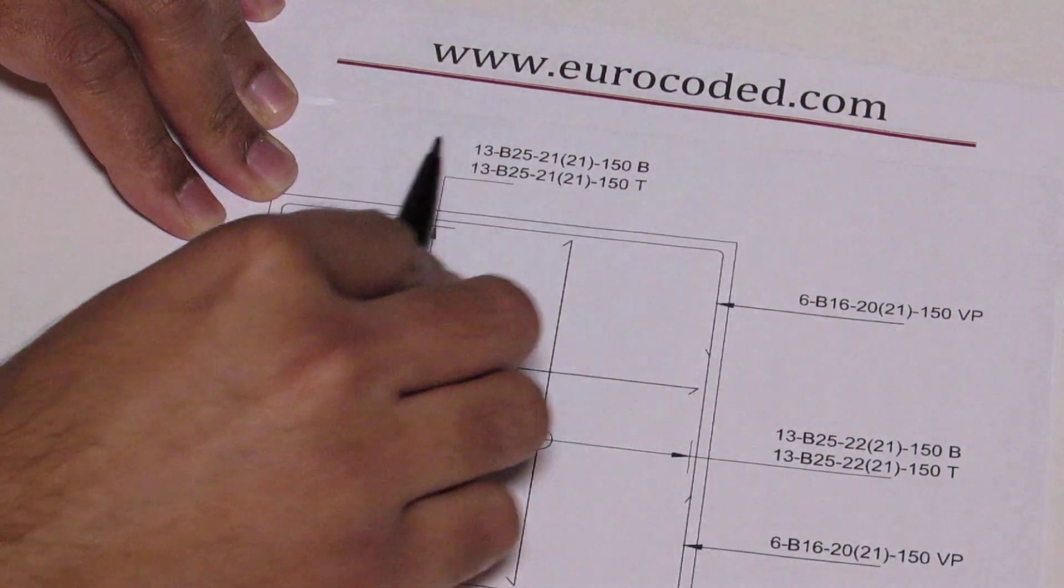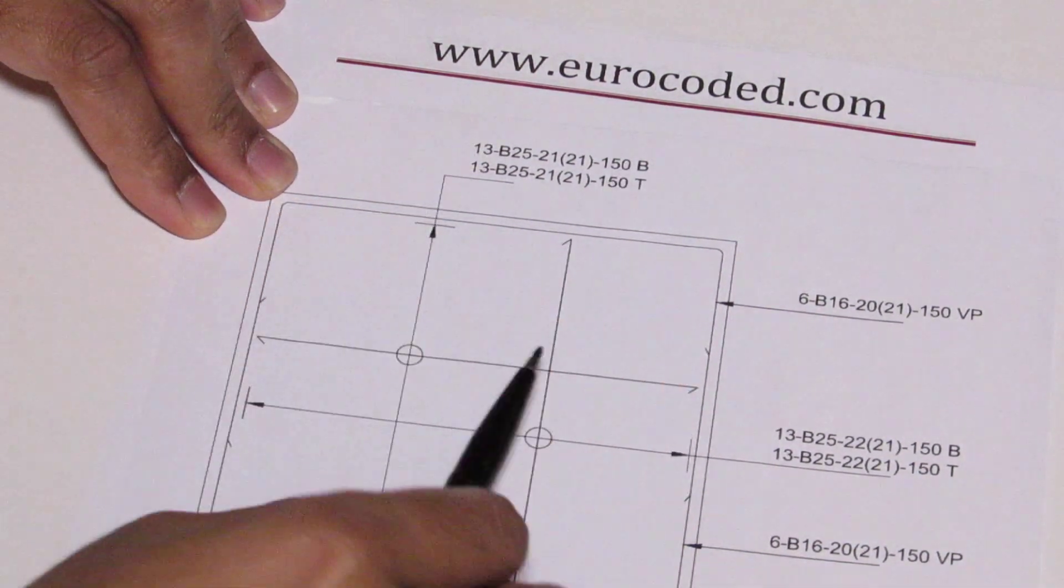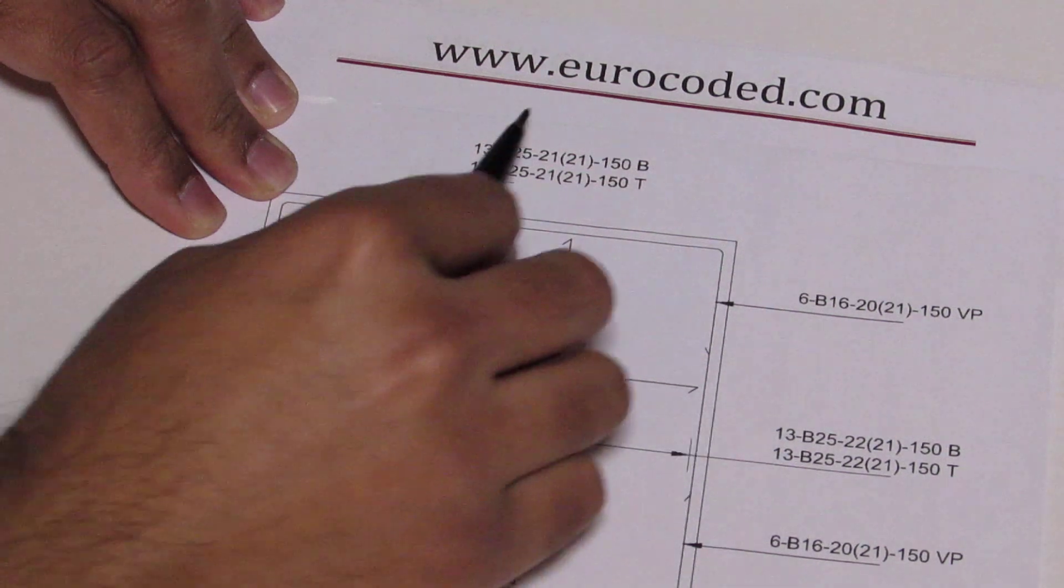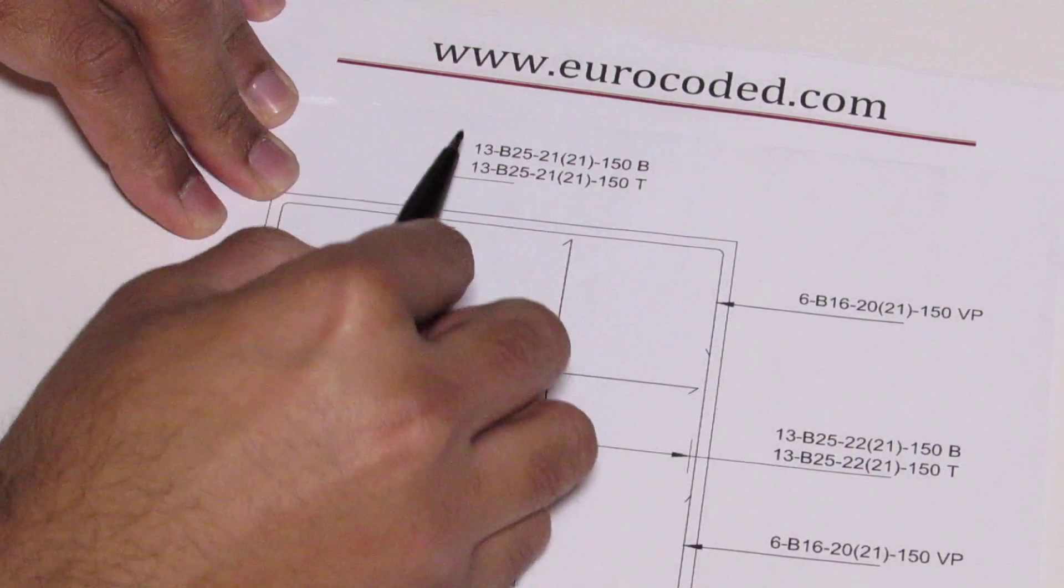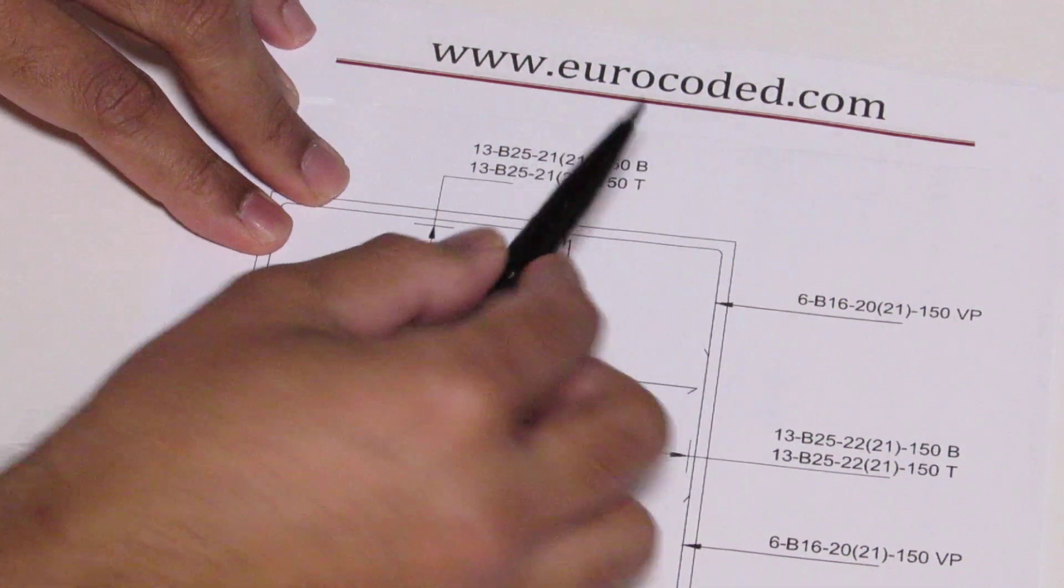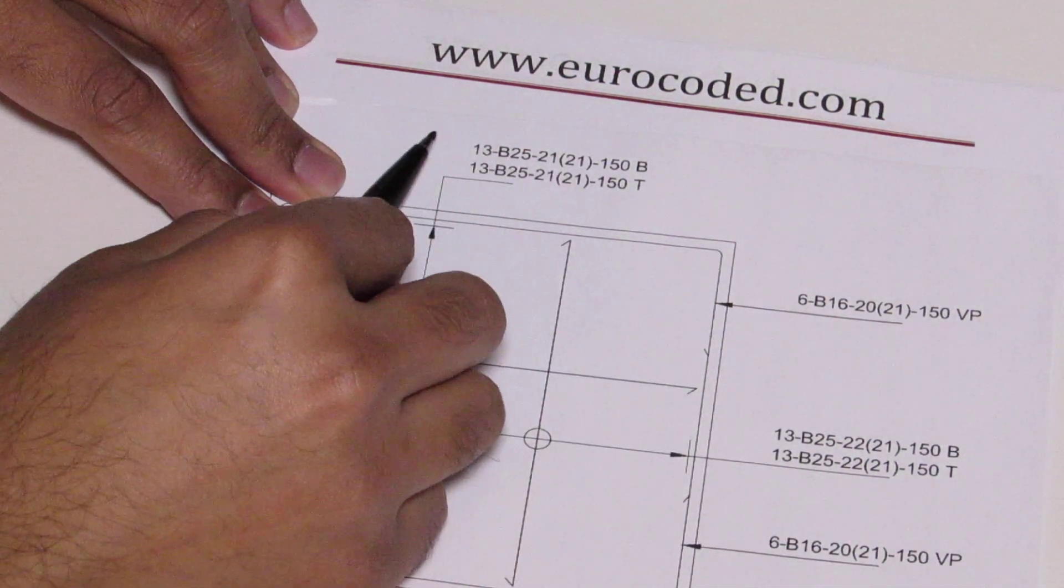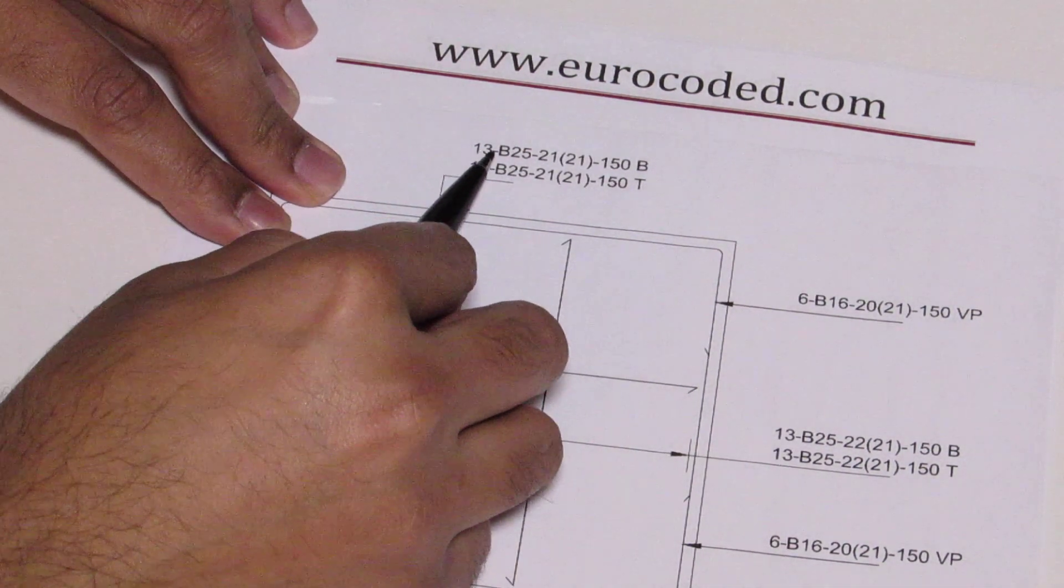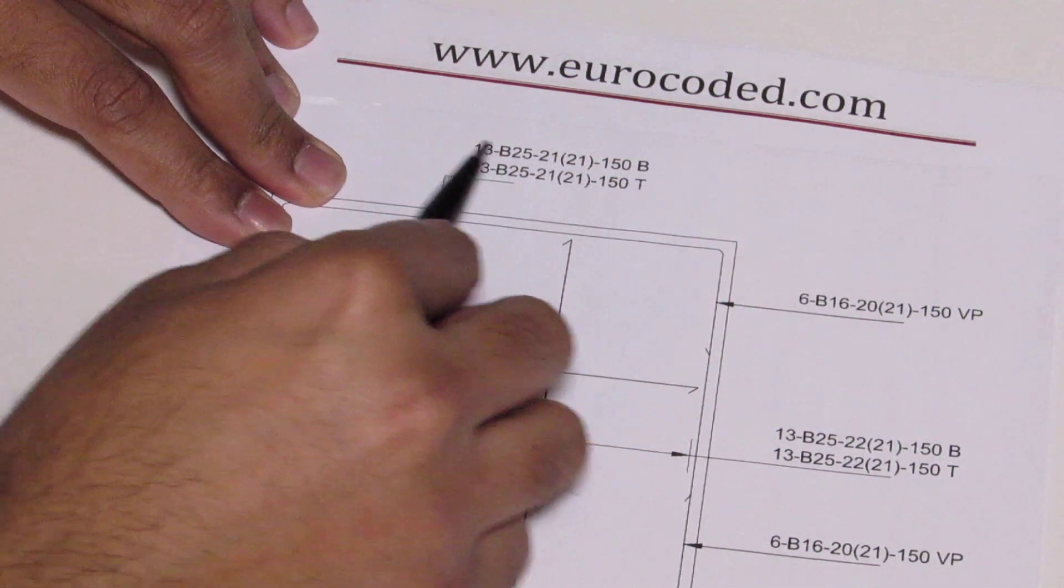Once you know how to read it you can get the same information. So that's the bar mark and the first number is how many of those bars. From bar mark 21 there are 13 number of bars in this particular scenario.